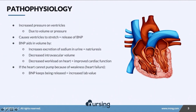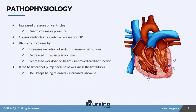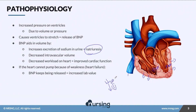In a normal heart, increased volume coming into the system causes increased ventricular stretch. In that case, BNP is then released as the ventricles stretch. What BNP does is promote the excretion of sodium in urine, which is called natriuresis. As BNP is released, it causes sodium excretion in urine, which also leads to the excretion of water — so we're getting rid of some of that volume to decrease the stretch.